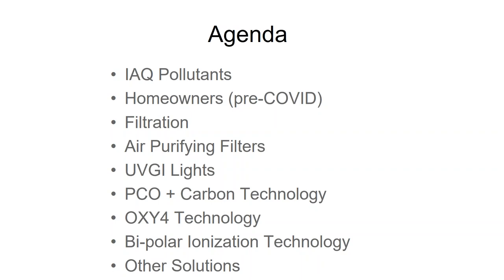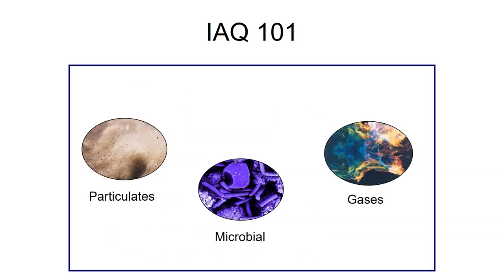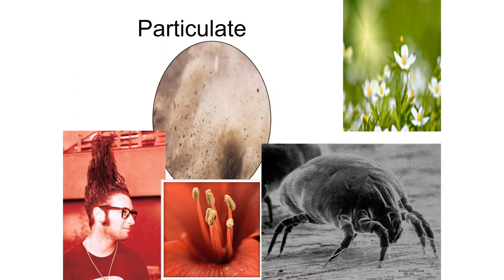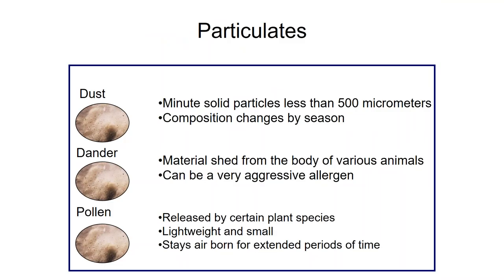The stuff in the air that we don't want breaks into three buckets: particulates, microbials, and gases. Particulates have three sub-buckets: dust, dander, and pollen. Dust is mostly human skin cells flaking off your body. Dander is what's shedding off your pets, and pollen comes from plants. Different people have different allergies — dust is typically a visual problem, while dander and pollen typically trigger allergic reactions.